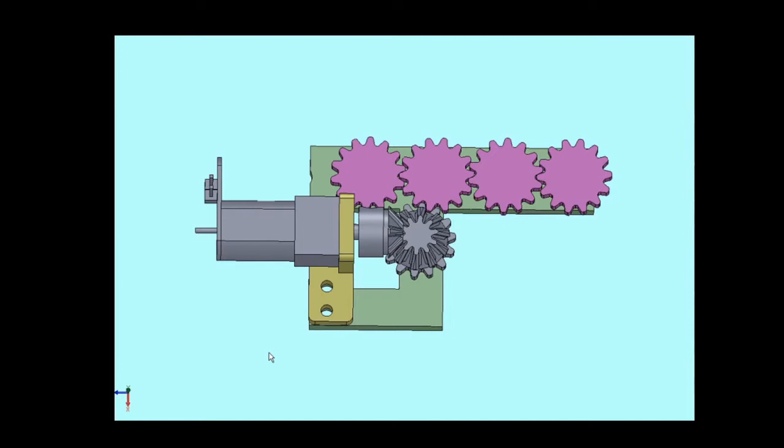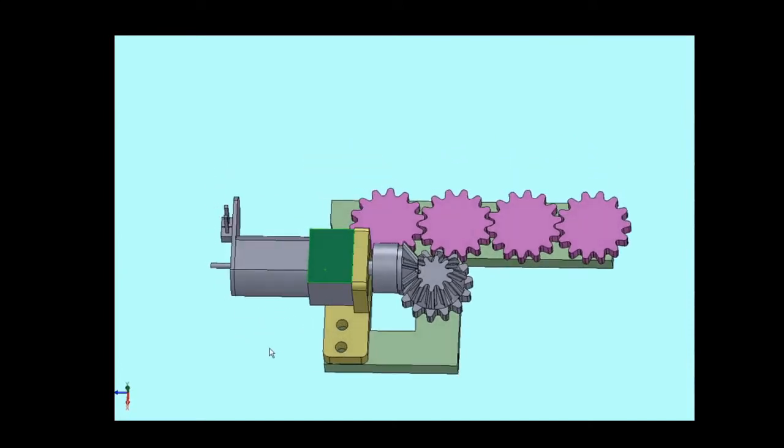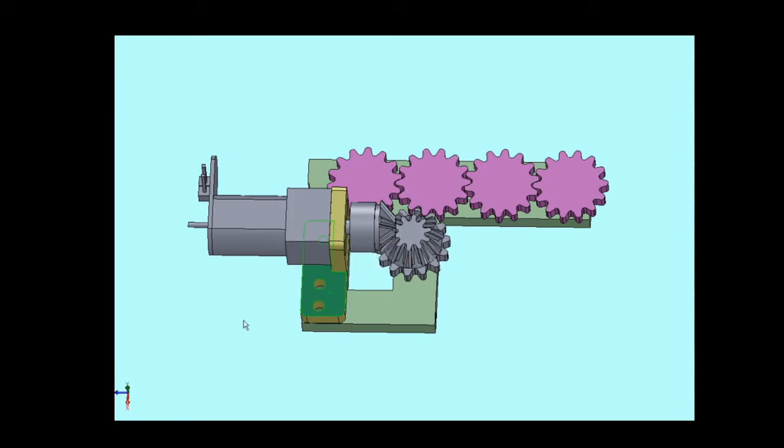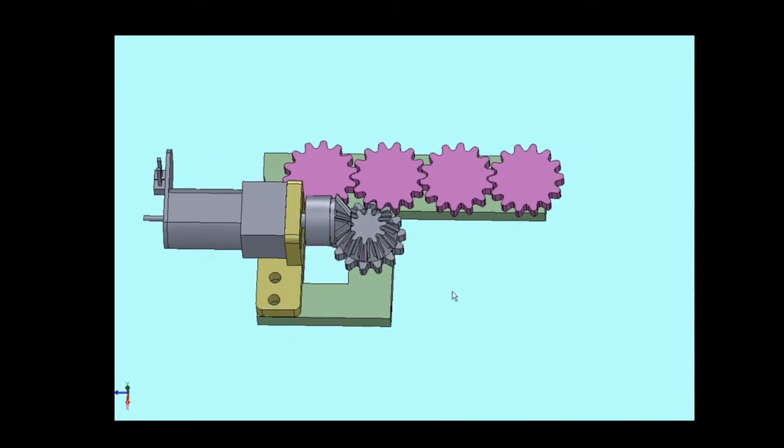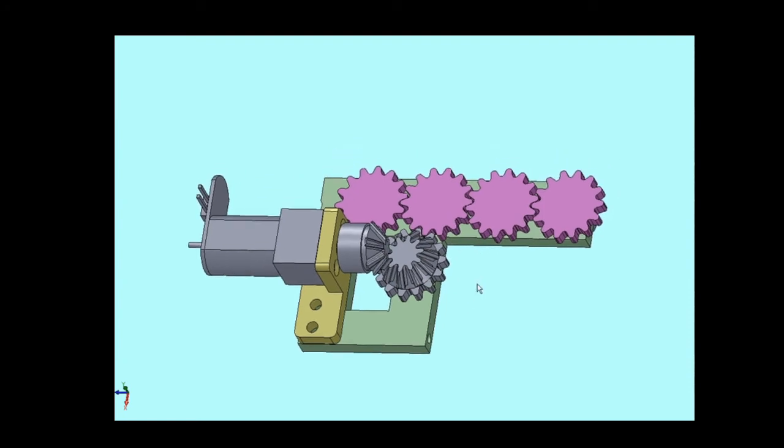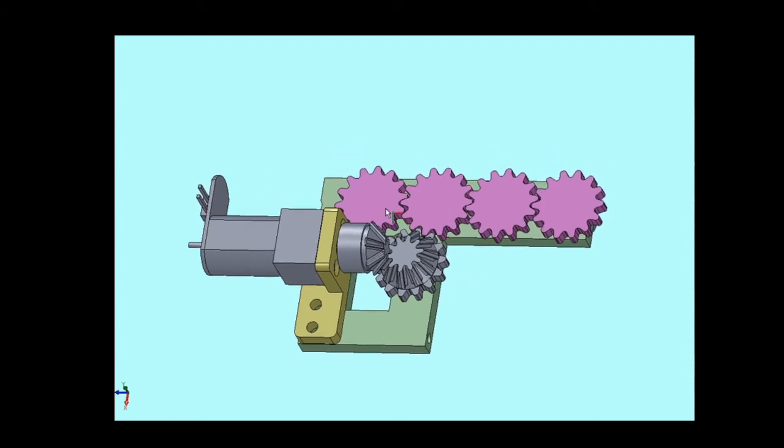Here we have another prototyping setup based around one of the motors. So we have the motor right here, which is mounted on a bracket. And then directly coupled to the motor shaft is a bevel gear. And this interacts with a combination bevel and spur gear, which is all one piece. And that combo gear drives a line of spur gears. The tricky part of this is getting the design of the bevel gears correct. So let's go take a look at a prototype of that.